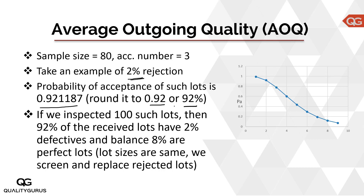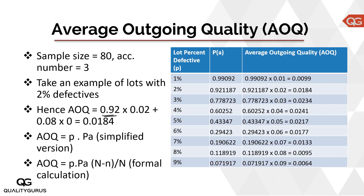So a 2% defective lot comes in, there's a 92% chance of that lot getting accepted and an 8% chance of it getting rejected. If we have 100 such lots, 92 will be accepted and 8 will be rejected. Those rejected lots will go through screening and bad parts will be replaced by good parts. So 92% of the time we will receive a lot which has 2% defectives — that's what happens in our average outgoing quality calculation.